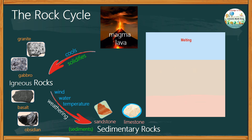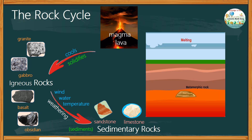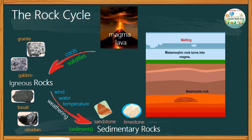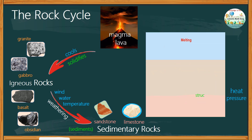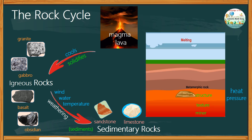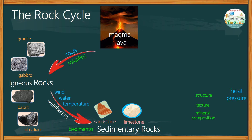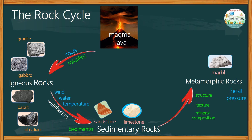When sedimentary rocks are buried within the Earth due to tectonic movements, they are subjected to high heat and pressure. This causes them to change structure, texture, and mineral composition, transforming sedimentary rocks into metamorphic rocks. For example, limestone, which is a sedimentary rock, turns into marble, which is a metamorphic rock. Another example is shale turning into slate.